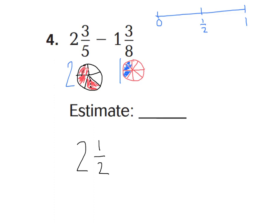Now let's look at one and three-eighths. I went ahead and shaded in three parts out of eight parts to show three-eighths. Here's my number line: zero, one-half, and one-whole. If I were to have this cut into eight parts, one-half is four-eighths. Three-eighths would be right about there. On this number line, three-eighths is closest to four-eighths, also known as one-half. So I would estimate this to be one-half, and call this one and one-half.